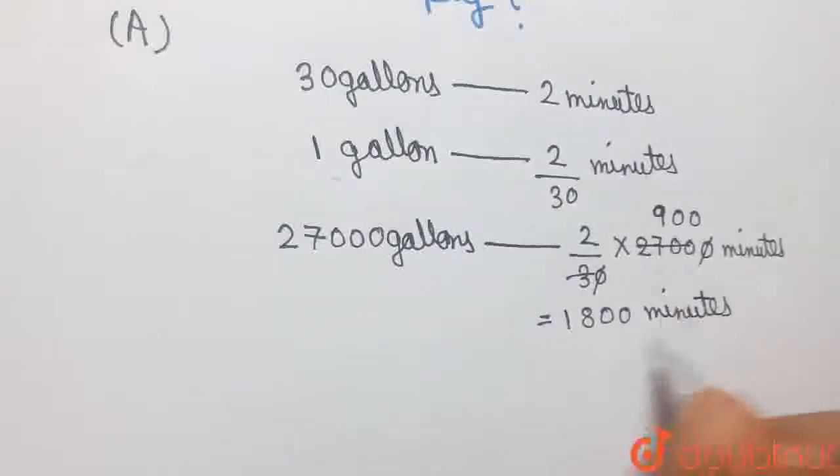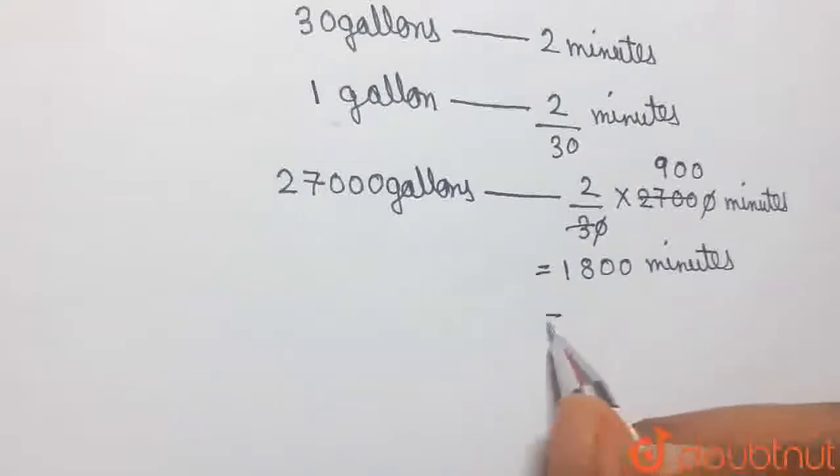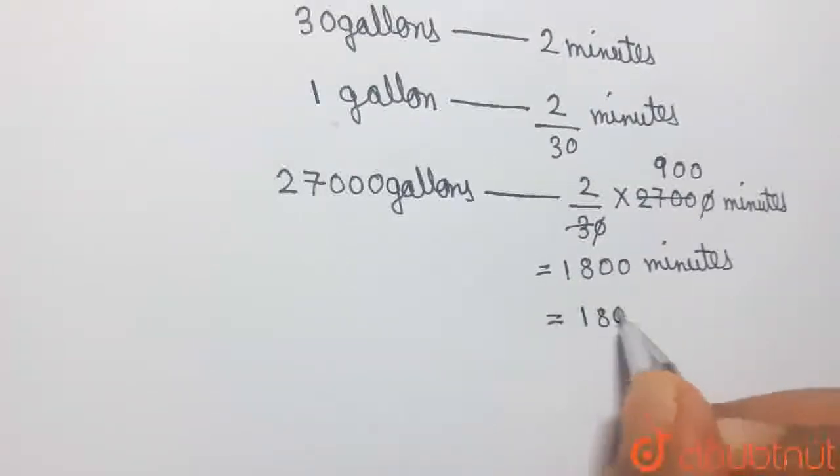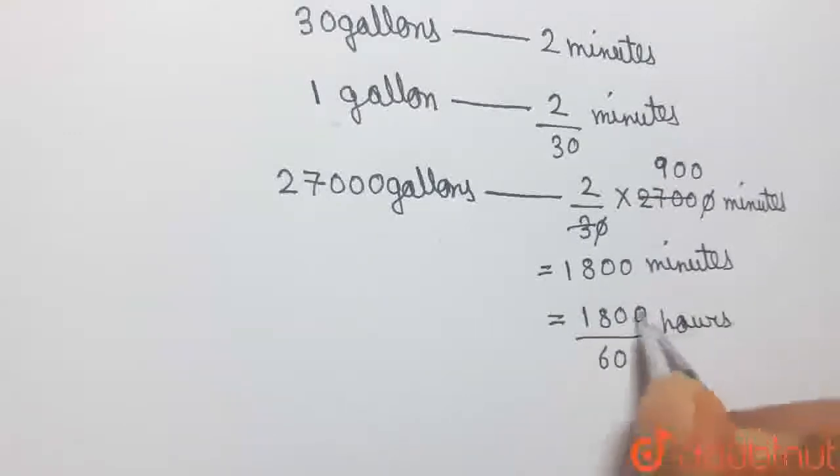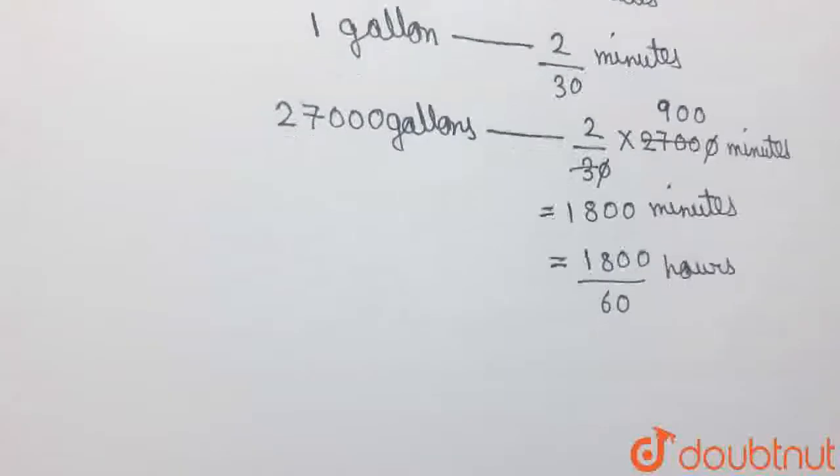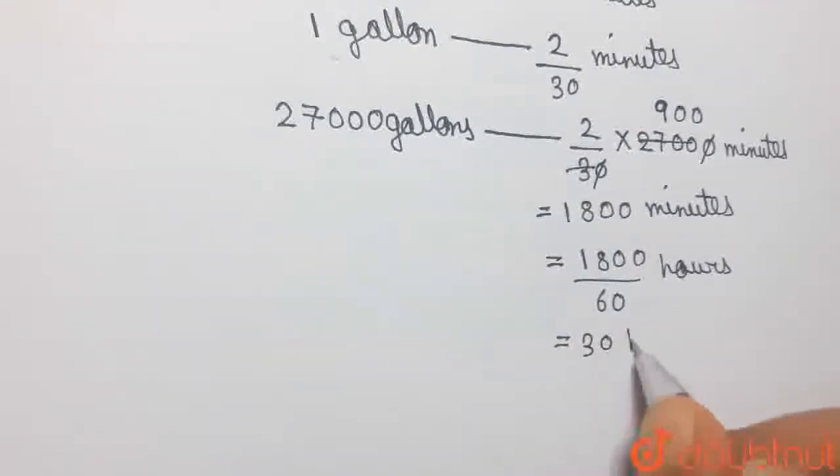Now, 1800 minutes can be converted to hours simply by dividing it by 60. 1800 minutes can be written as 1800 by 60 hours, and 1800 by 60 obviously is equal to 30 hours.